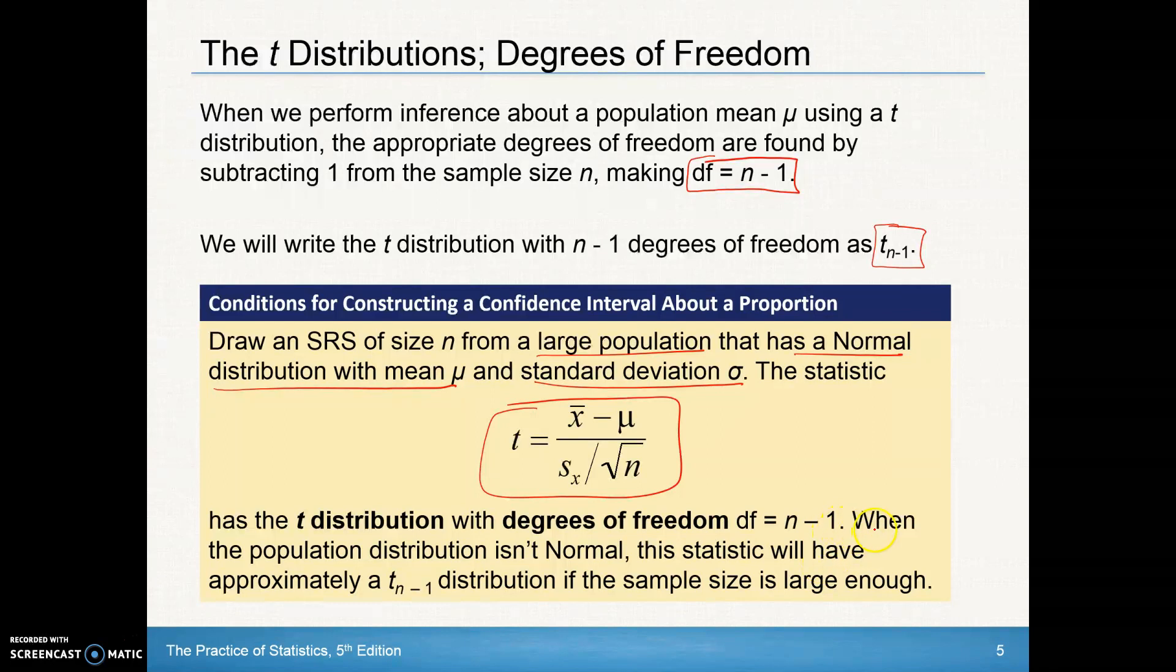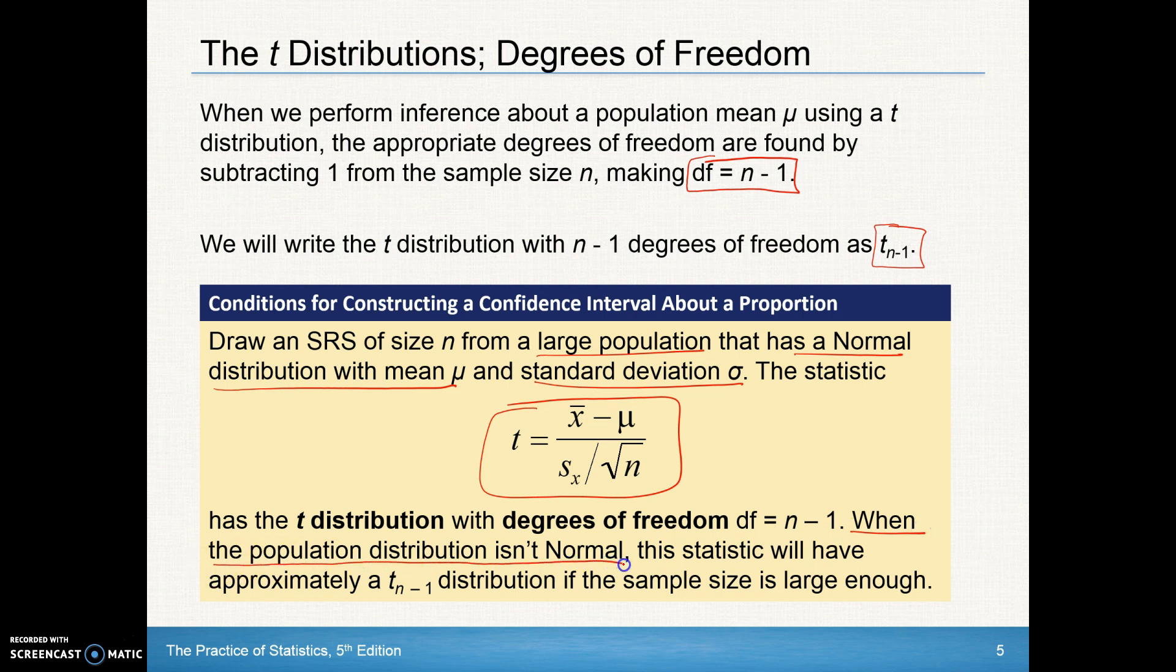Here's a key statement here. When the population distribution isn't normal, the statistic will have approximately a t sub n minus one distribution if the sample size is large enough.